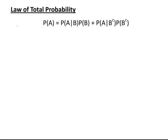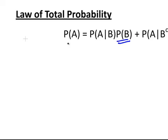We also have the law of total probabilities. We have two complementary events, B and the complement of B, and then we have the intersections of A with both of those events. So the probability of A given B times the probability of B, plus the probability of A given the complement of B times the probability of the complement of B, together give you the probability of A.